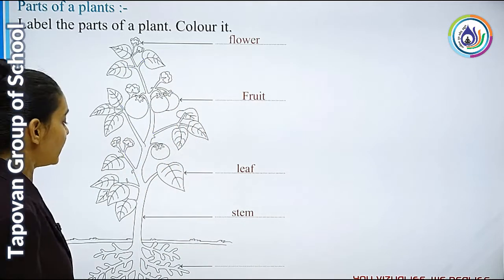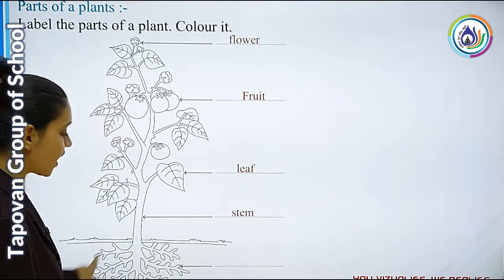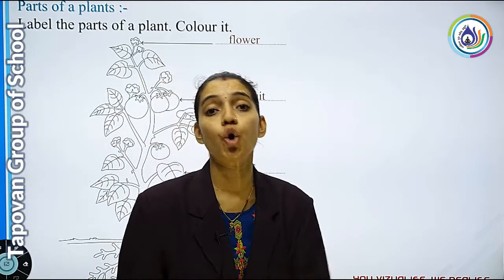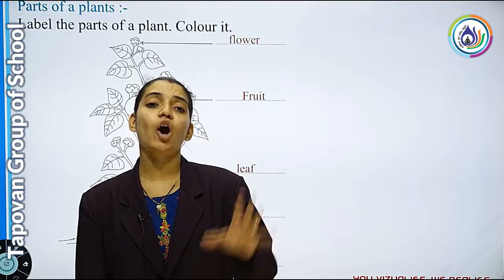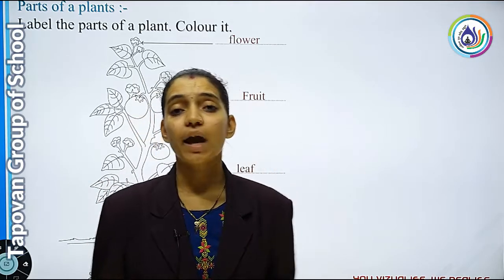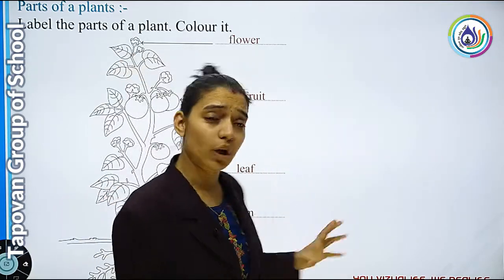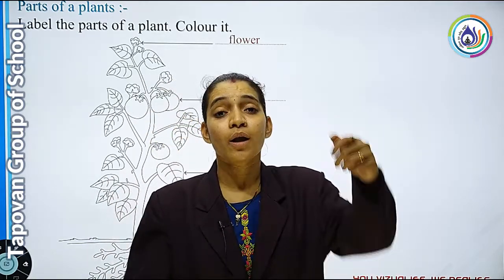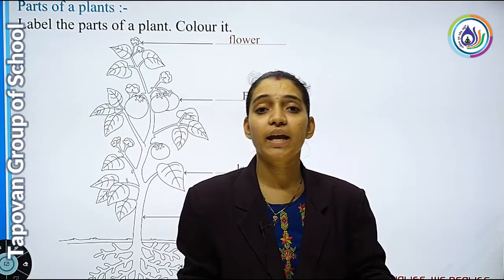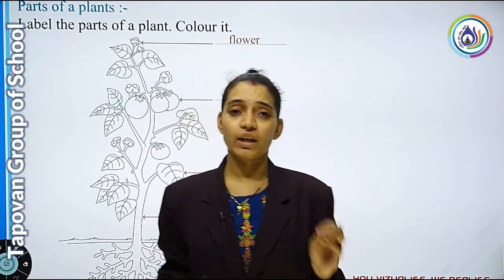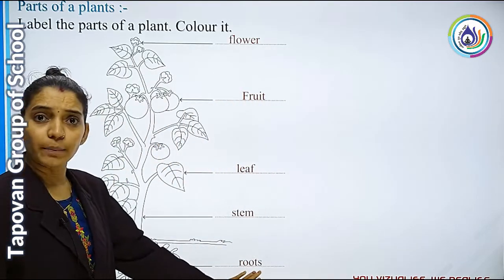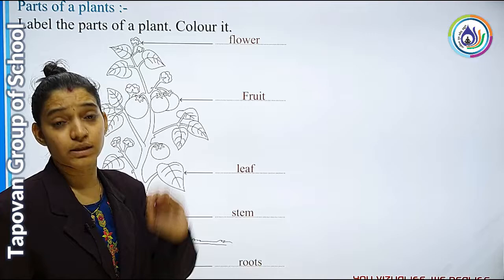Next नीचे का portion दिखा रहा है, तो उसे हम क्या कहेंगे? Roots. Roots का मतलब क्या होता है? जड़ें. आप कोई भी plant लो, जब उस plant को ज़मीन में से निकालोगे, तो आपको पतले-पतले धागे जैसा दिखेगा — उसे हम Roots कहेंगे. Spelling: R-O-O-T-S.